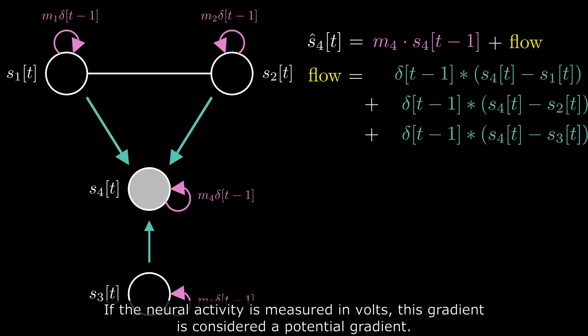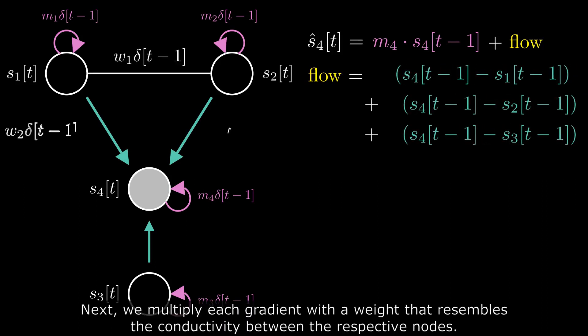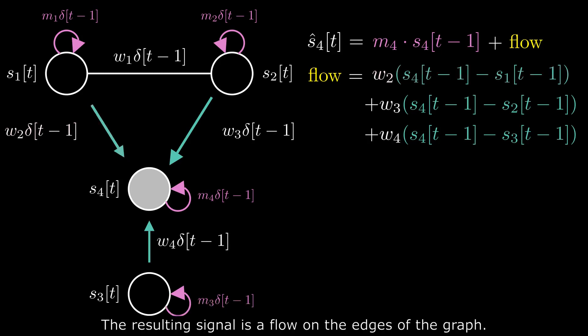If the neural activity is measured in volts, this gradient is considered a potential gradient. Next, we multiply each gradient with a weight that resembles the conductivity between the respective nodes. The resulting signal is a flow on the edge of the graph.